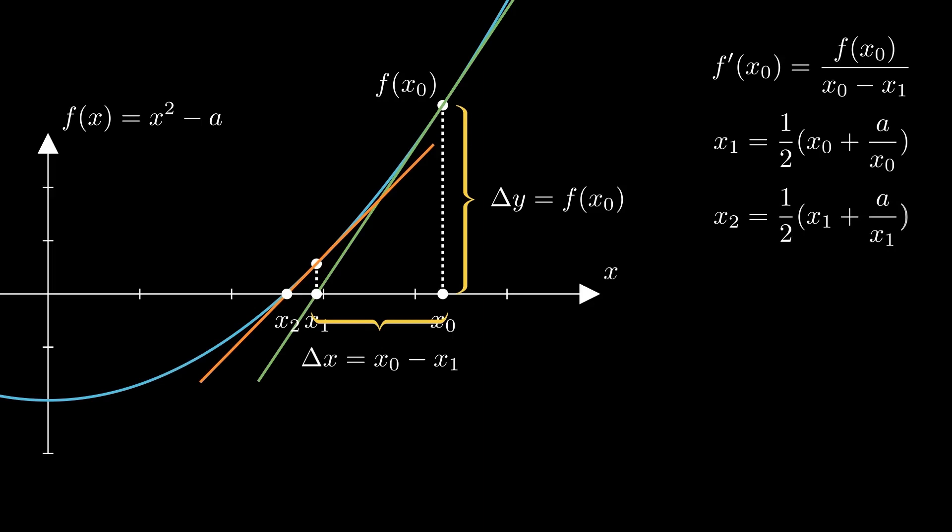This iterative method continues steadily converging towards the square root. In general, the relationship between the next and previous guess is this. This iterative formula fine-tunes our estimation with each step bringing us closer to the precise square root.